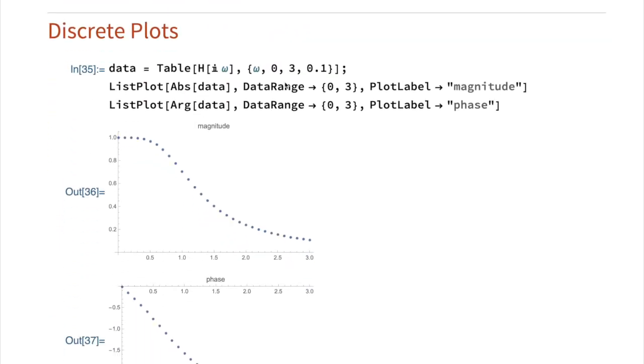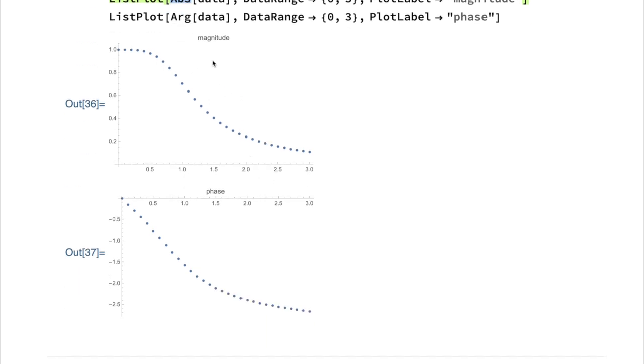Many of you will be using software that doesn't do continuous plots. So if you're using MATLAB or C or even Microsoft Excel, you want to create an array or a table of data, and that's what I'm doing here. I'm using the table command to create a list of the values of this expression with omega from 0 to 3 in increments of 0.1. And that gives me a list, which I can then plot with absolute value and ARG, and I get magnitude and phase.